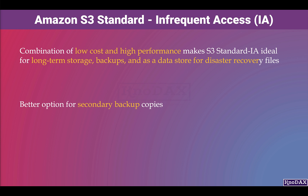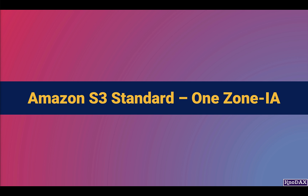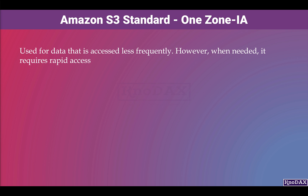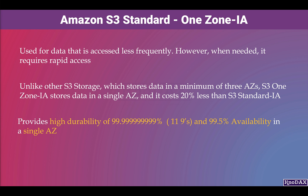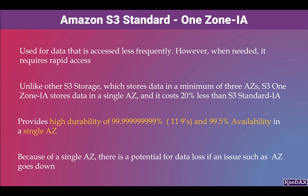S3 One Zone Infrequent Access is used for data that is accessed less frequently but requires rapid access when needed. Unlike other S3 storage classes which store data in a minimum of 3 AZs, S3 One Zone IA stores data in a single AZ and costs 20% less than S3 Standard Infrequent Access. It provides high durability of 11 nines and 99.5% availability in a single AZ, but there is a potential for data loss if the AZ goes down.